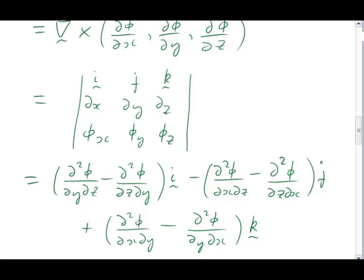But now look at each individual component. The first one, d²phi/dy dz, minus d²phi/dz dy. That's the same differentiations, just in the opposite order each time. It's the same in the second and third component. And now we can use the result that it is almost always the case that the order of differentiation is immaterial. That means that all of these terms cancel themselves. We end up with the zero vector.